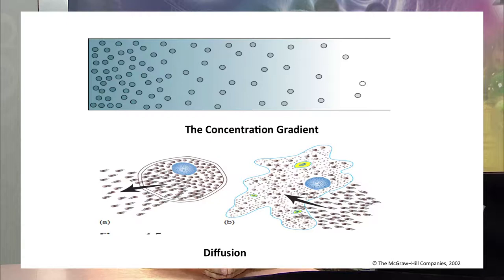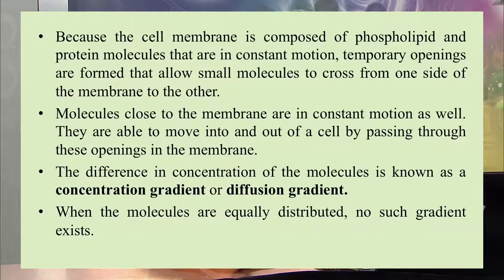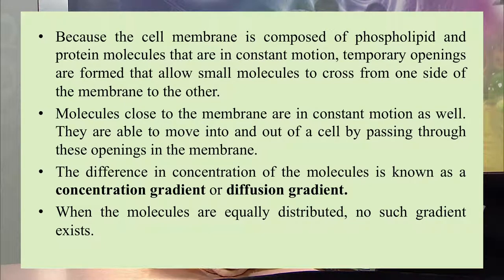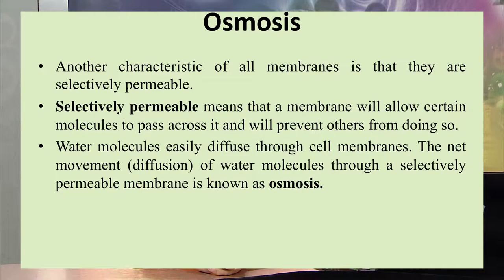The cell membrane is made up of phospholipid and protein molecules. There are temporary openings that form allowing small molecules to cross from one side of the membrane to the other. Molecules close to the membrane are in constant motion and are able to move in and out through these passages formed in the cell membrane. The difference in the concentration of molecules is known as the concentration gradient or diffusion gradient, and molecular movement continues until no such gradient exists.